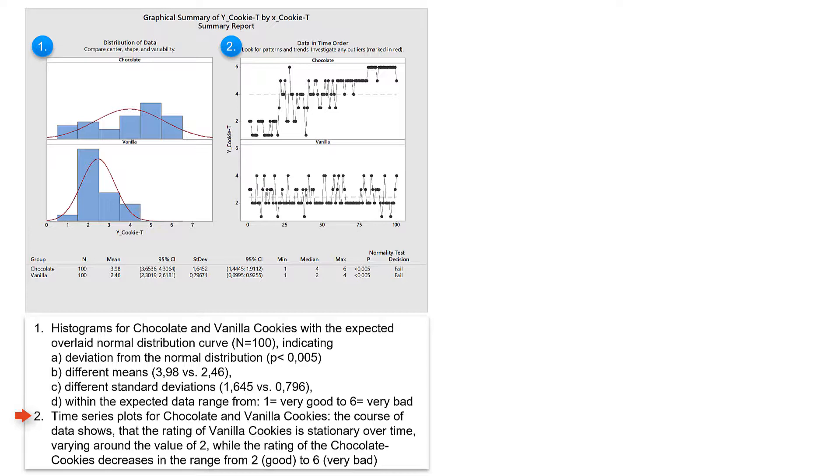The time series plot shows for the vanilla cookies a stationary course of events and for the chocolate cookies a shift in the taste rating from good to bad. This means there is a difference in taste between the two types of cookies. But is this difference statistically significant and practically relevant? We will test this difference later in the hypothesis tests.